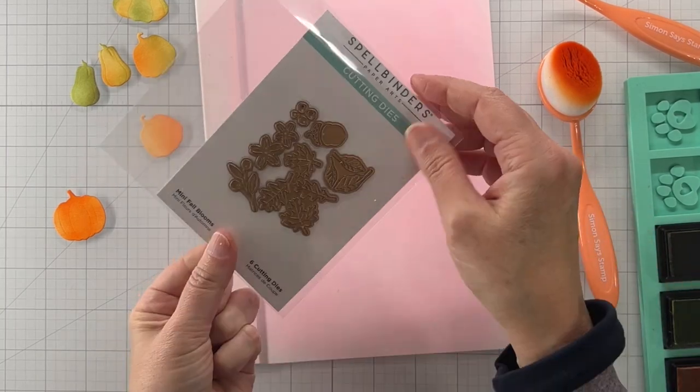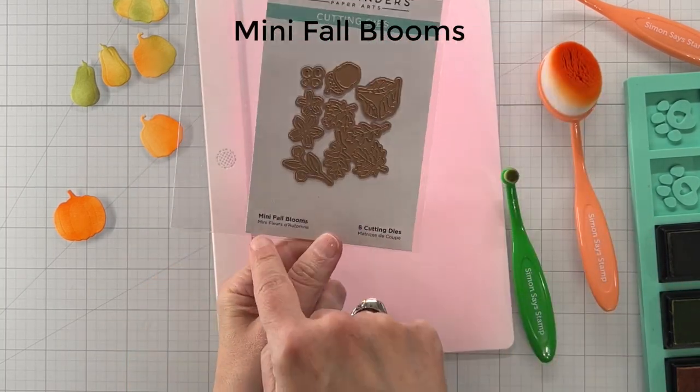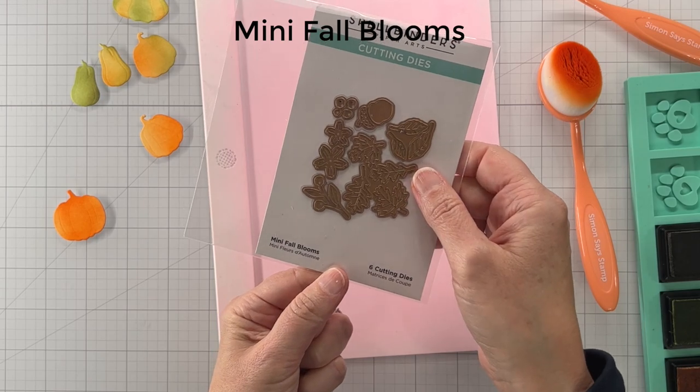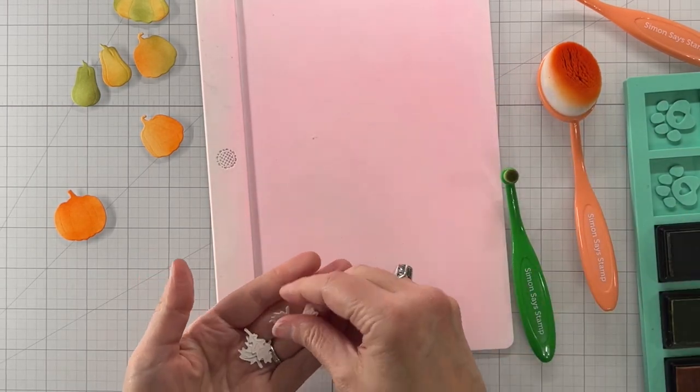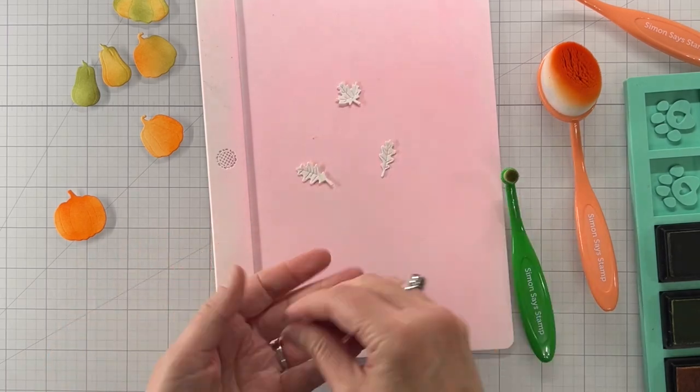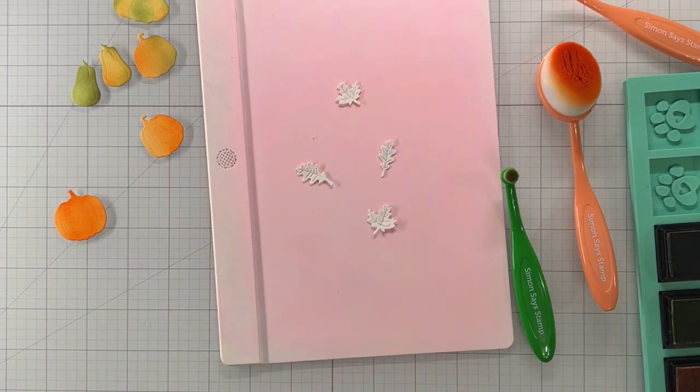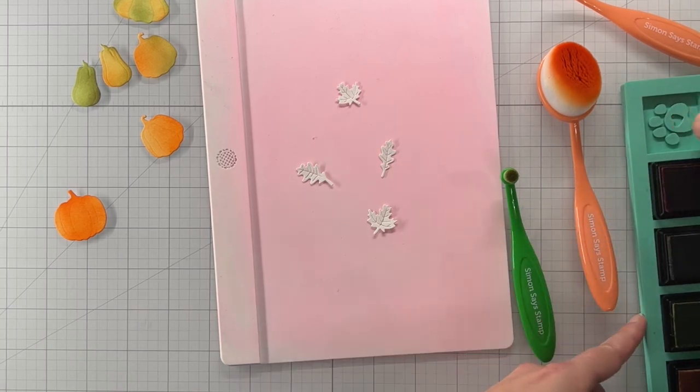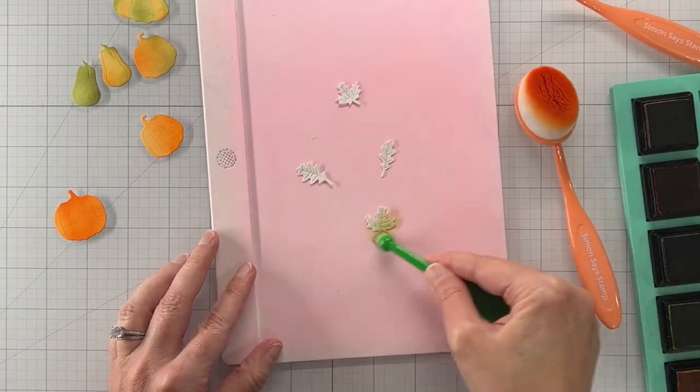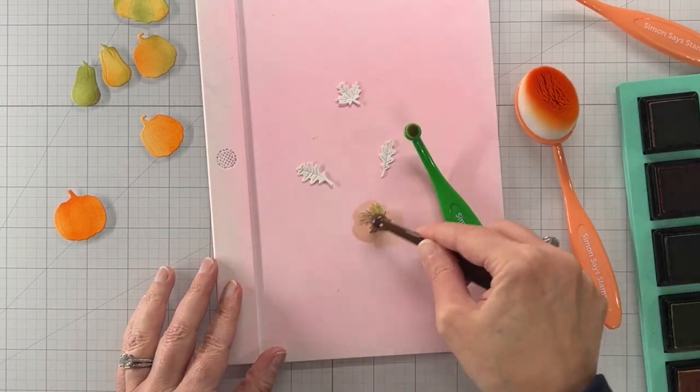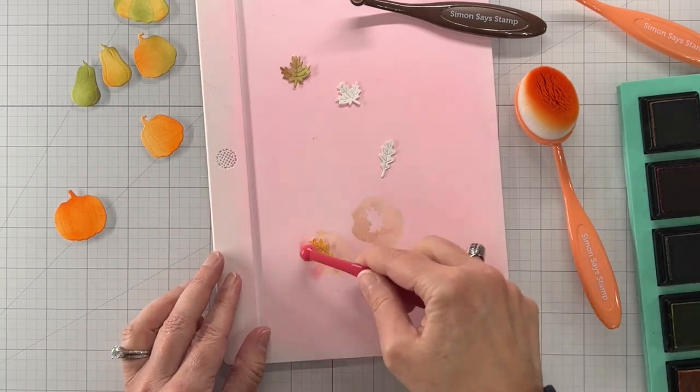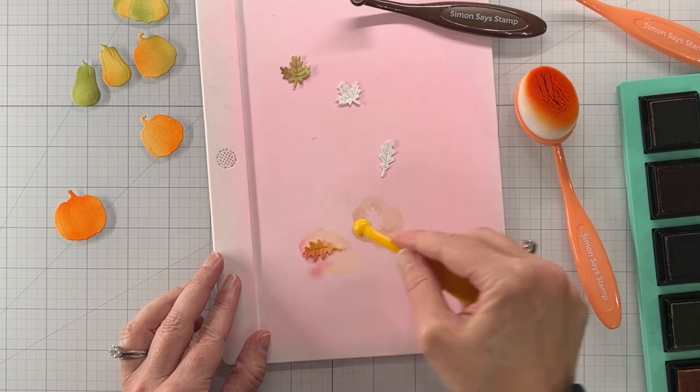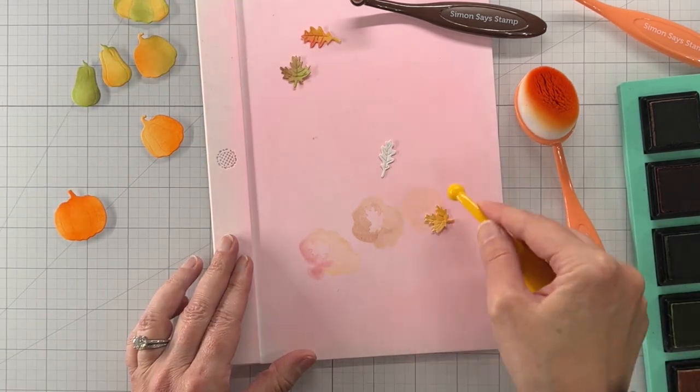So because I'm making a fall themed wagon I decided to pull out another set, the mini fall blooms, and I'm going to add some leaves to my little wagon vignette. Again these were a lot of fun to color because I got to pull out some reds and oranges. They're so easy to make them look like real fall leaves.